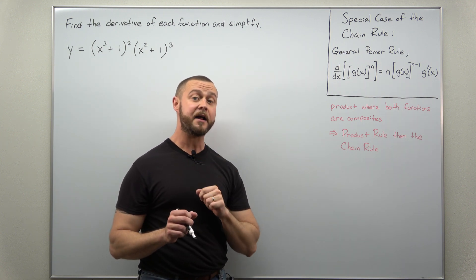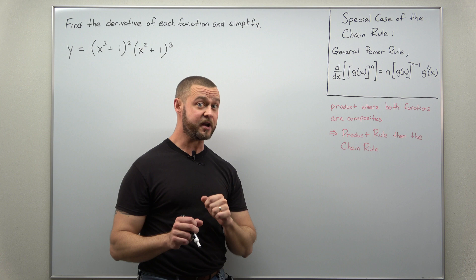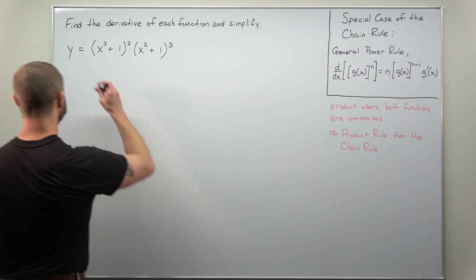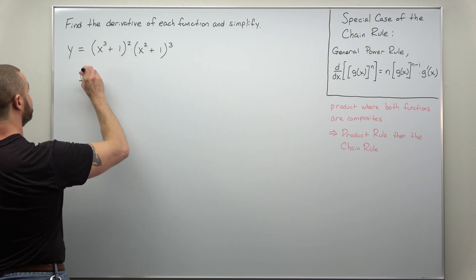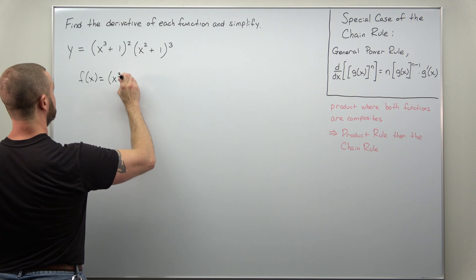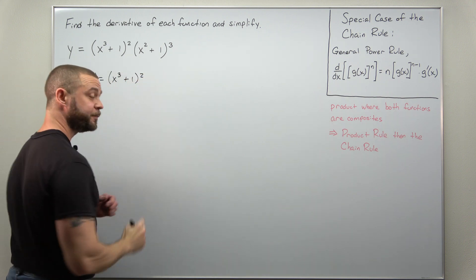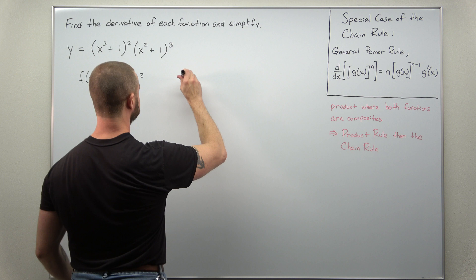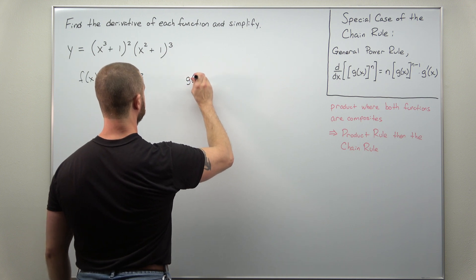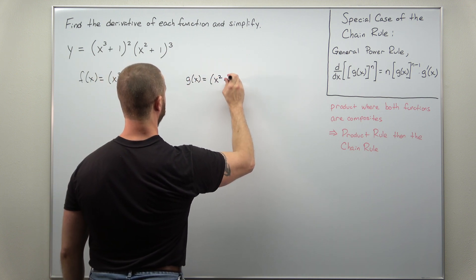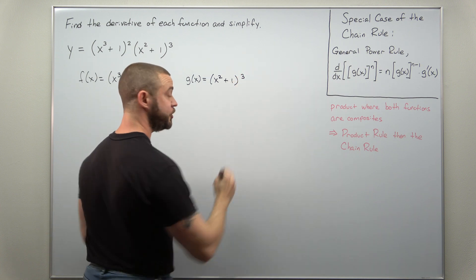Let's go ahead and identify our function as a product f(x) times g(x). We'll call the first function f(x) = (x³ + 1)², and then g(x), the second function, will be (x² + 1)³.